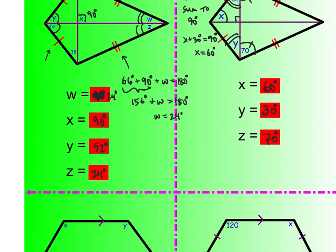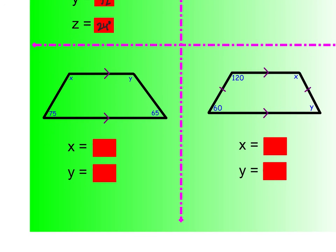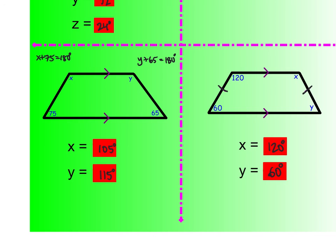In the fifth example, I don't have an isosceles trapezoid — no congruent side markings — so all I know is x plus 75 equals 180 and y plus 65 equals 180, giving x equals 105 and y equals 115. In the last example the trapezoid is isosceles, as shown by the markings, so base angles are congruent: x equals 120 and y equals 60. That's it for lesson five — we'll see you in the next video.